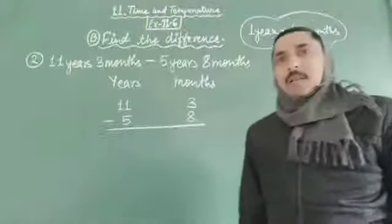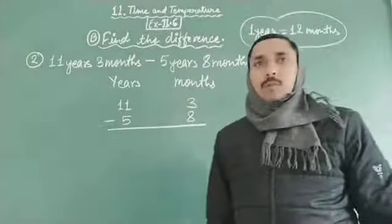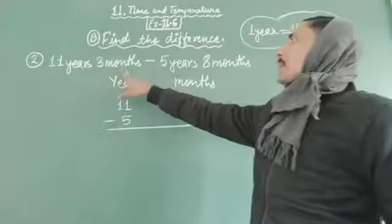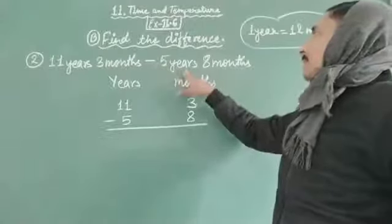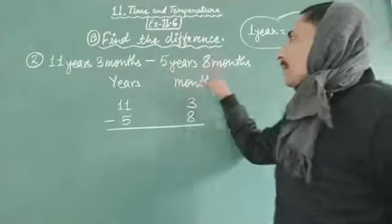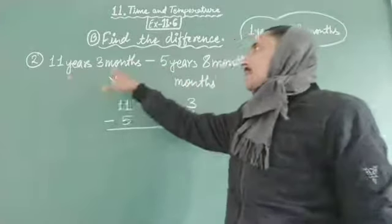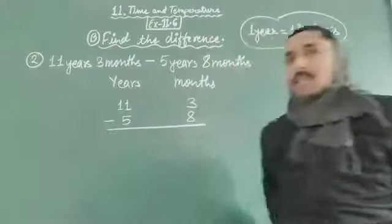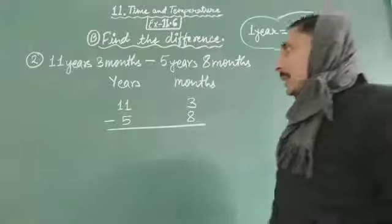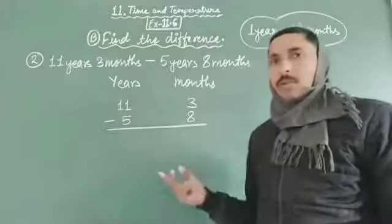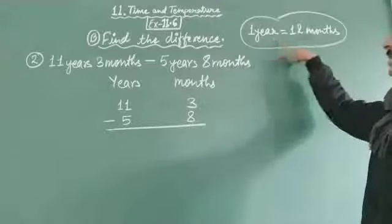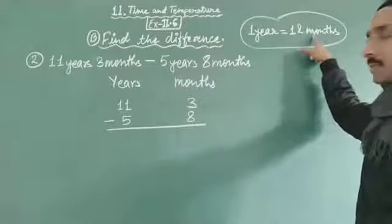Now let's solve Question Number 2: 11 years 3 months minus 5 years 8 months। 5 years 8 months को 11 years 3 months से subtract करेंगे। यहाँ पर process same है जो question 1 में follow किया था। याद रखना है: 1 year equals 12 months।